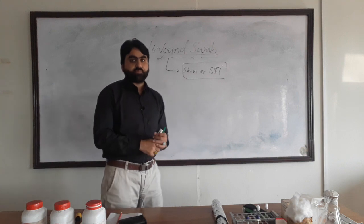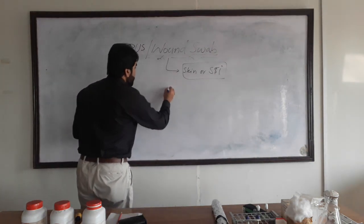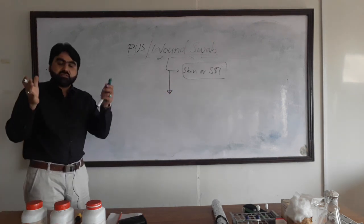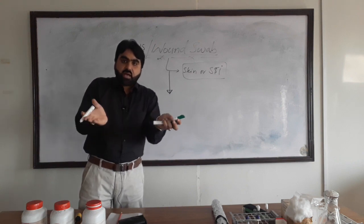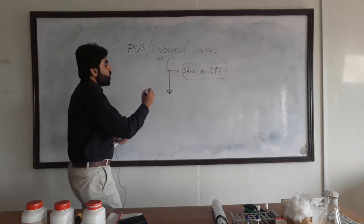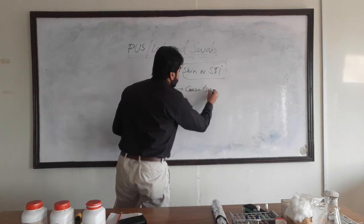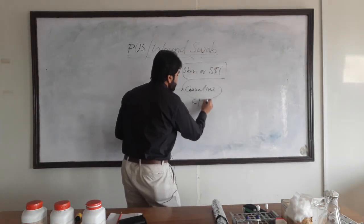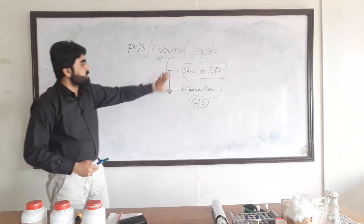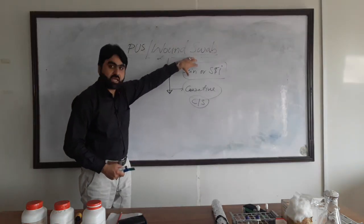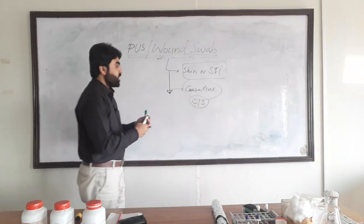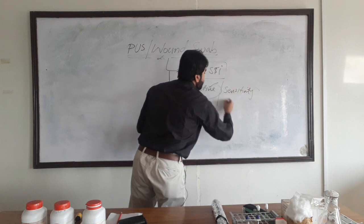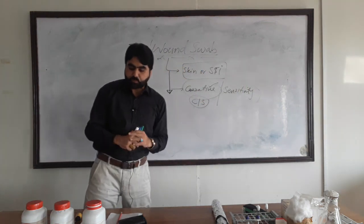As a result of infection in skin and soft tissue, we usually have pus at the infection site — a collection of pus at the site of infection. When a clinician wants to know the causative agent, he or she requests the laboratory to perform culture and sensitivity of this pus or wound swab, collected from the skin or soft tissue infection, in order to identify the causative agent and its sensitivity towards commonly used antibiotics.